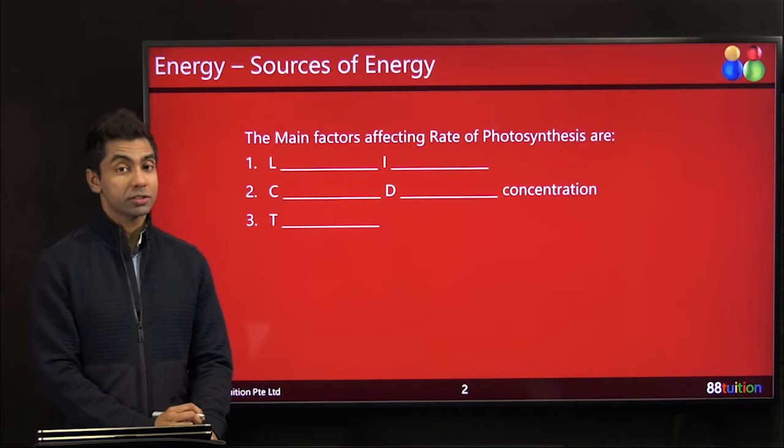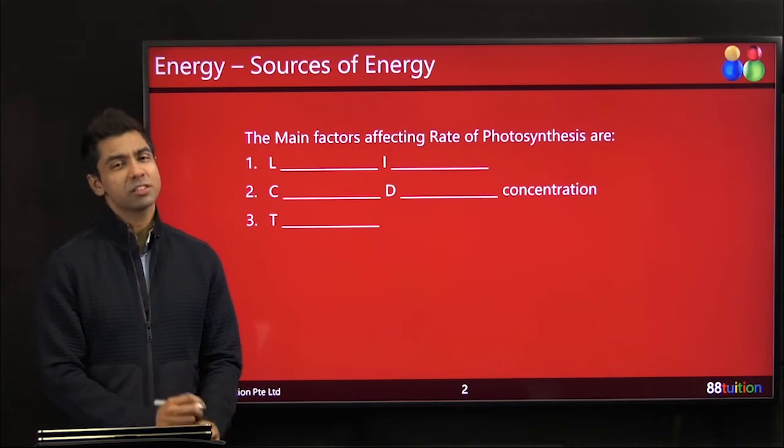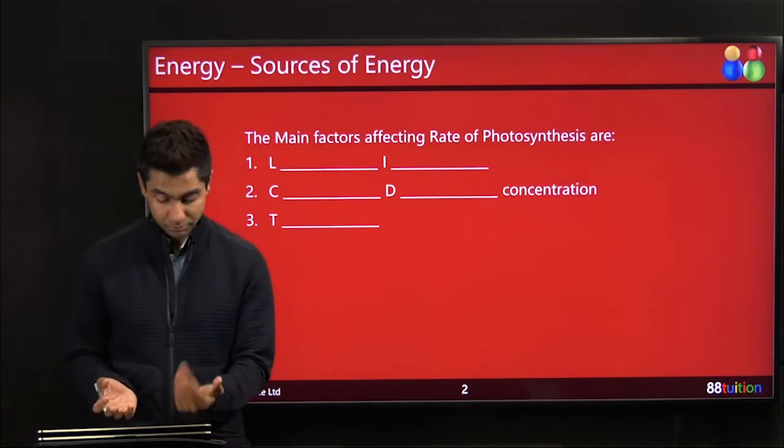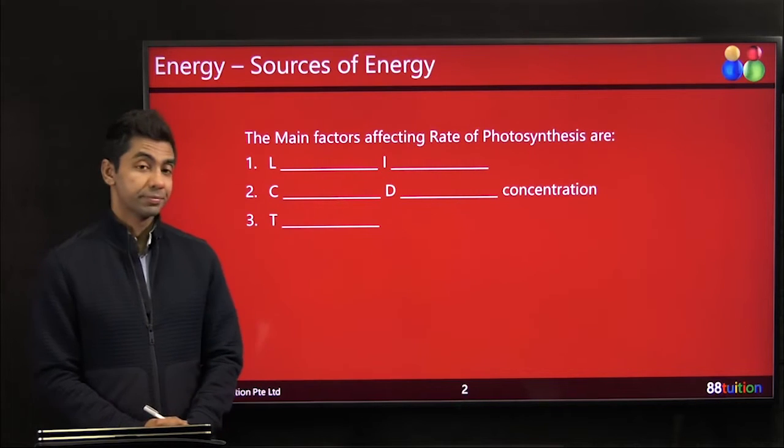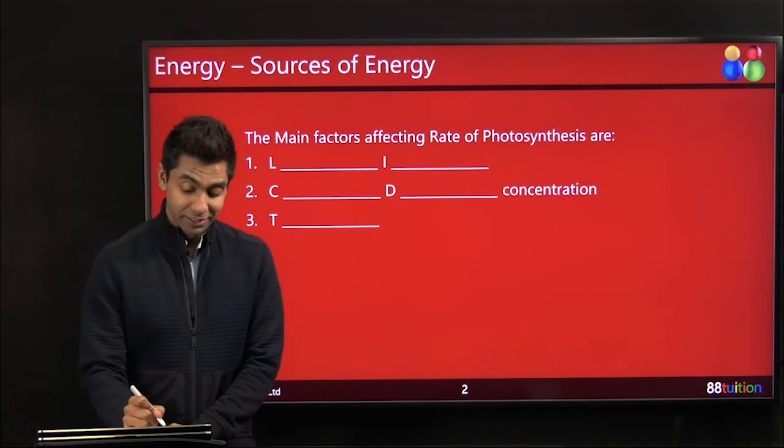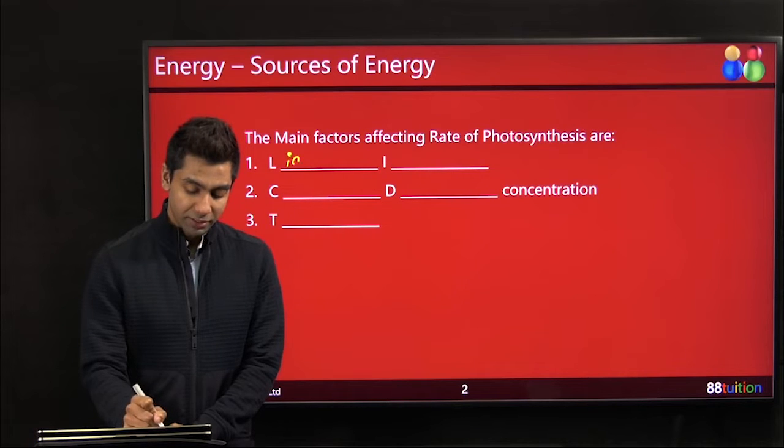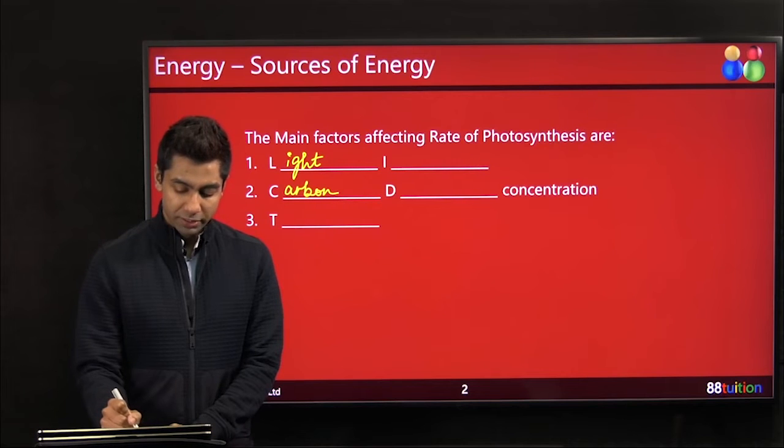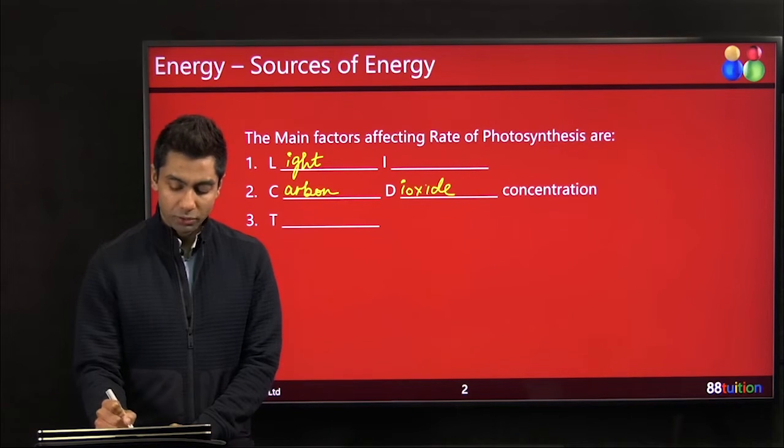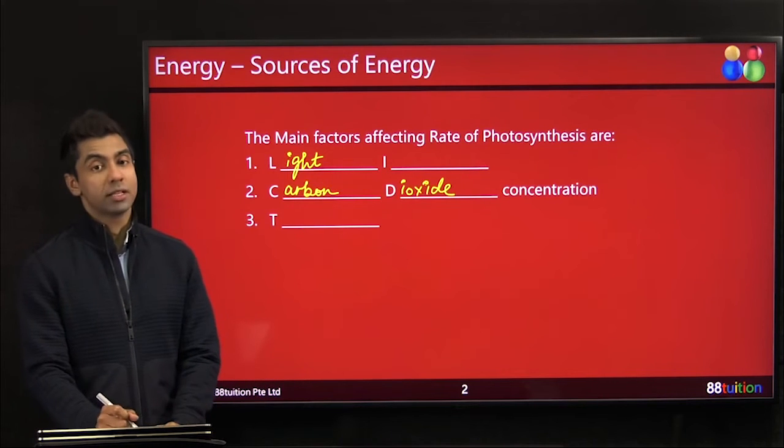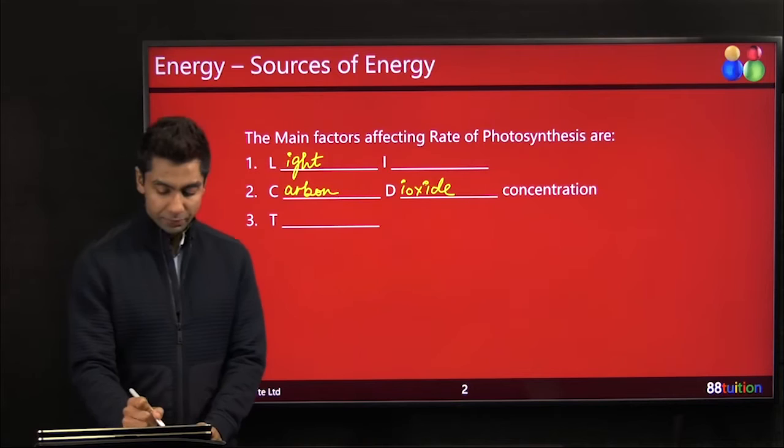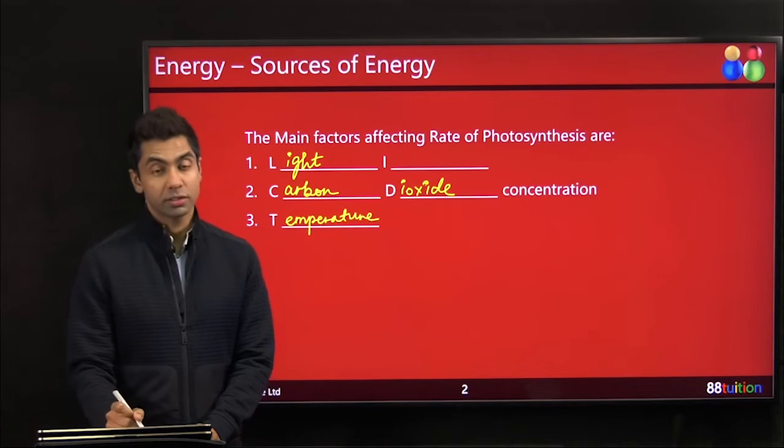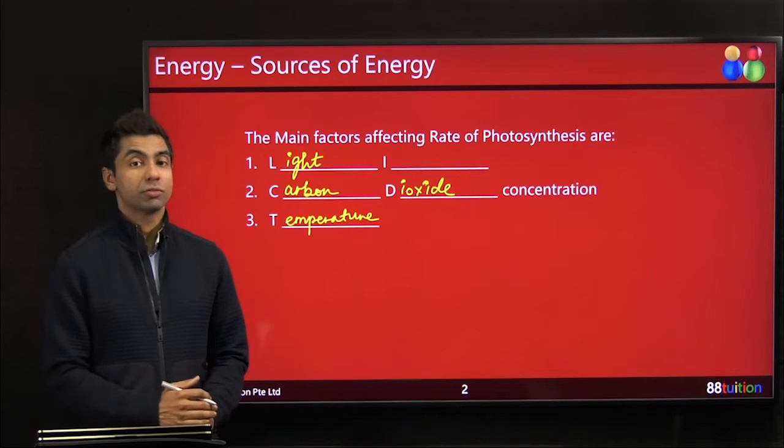We know the rate of photosynthesis can be affected by three reasons. Firstly, you know they need sunlight, they need carbon dioxide, and they need what's the other one? Can you tell me from here? Look at number three, see how many of you already guessed it. So the first one is nothing but light, second one is carbon dioxide concentration is required. The more the availability of carbon dioxide, the better they will photosynthesize. And the temperature.